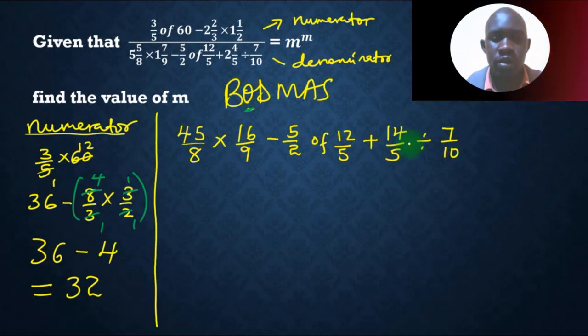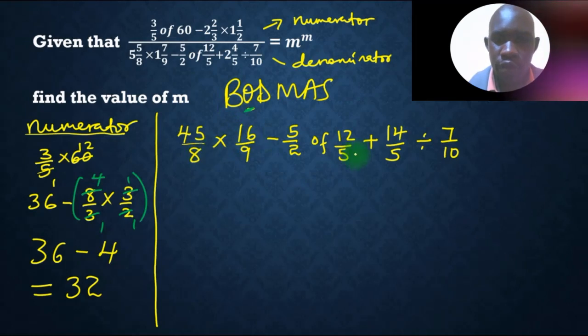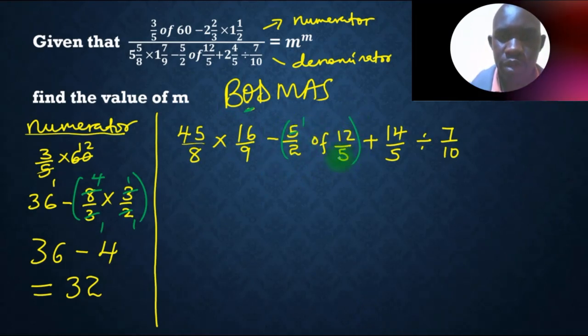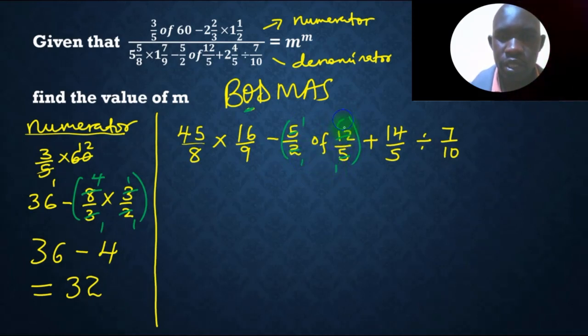The same case, we use BODMAS, we don't have bracket. Then we have of, so we deal with of first. So this is what we have. So by 5, 1, by 5, 1, by 2, 1, by 2, 1, by 2, 6. So we end up getting 6.